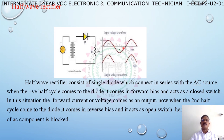During the negative half cycle, the diode's positive terminal is connected to the negative of the source. This puts the diode in reverse bias. When the diode is in reverse bias, it acts as an open switch and blocks the negative half cycle. No output is obtained during the negative half cycle.